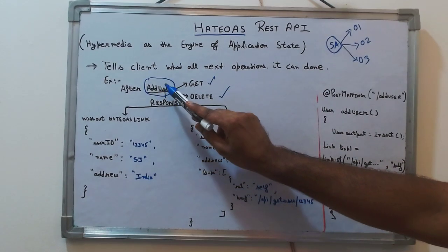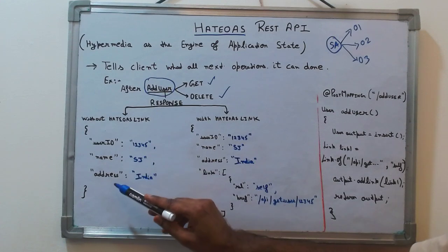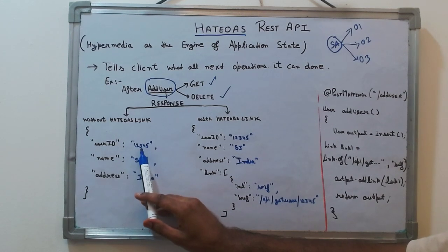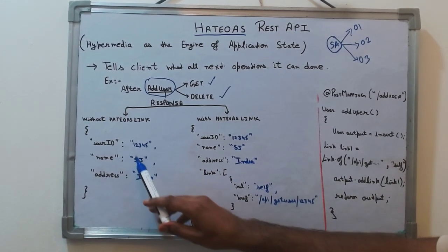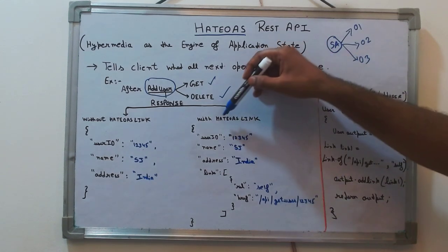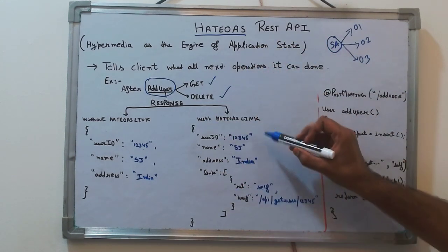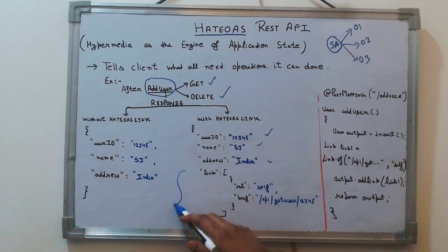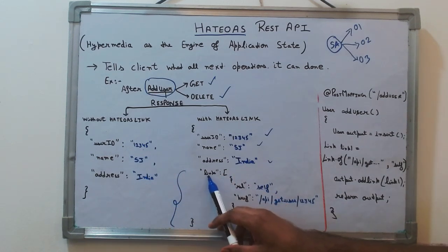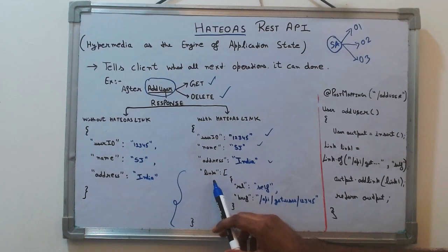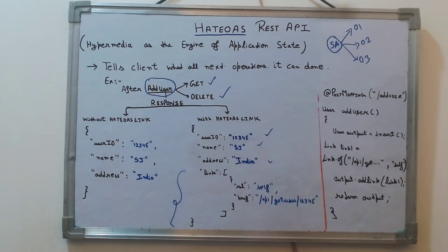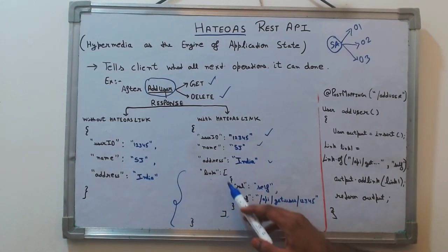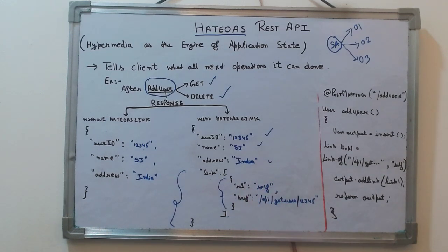If you are not using HATEOAS, the response after adding a user would look like: userId, name, address of the user. With HATEOAS, you get userId, name, address — but the difference is you also have a 'links' field. Links is an object from the Spring Boot HATEOAS dependency, and it's an array — you can have multiple objects inside it.